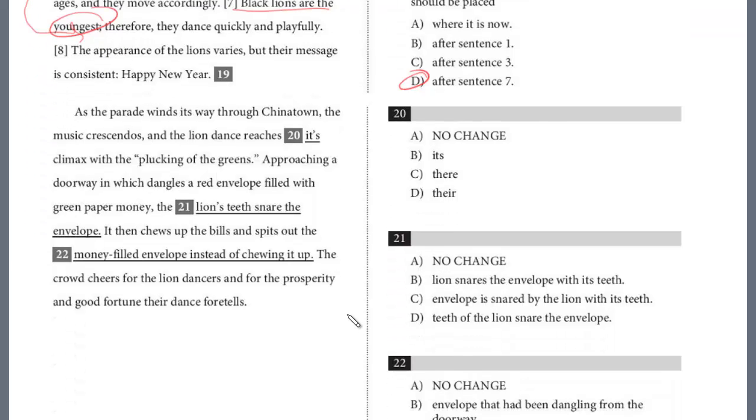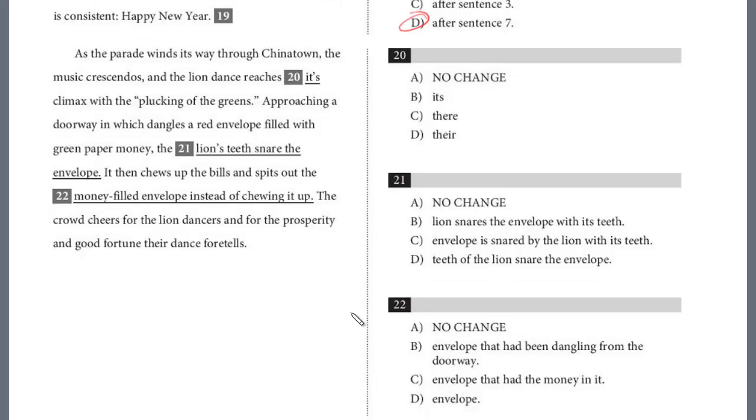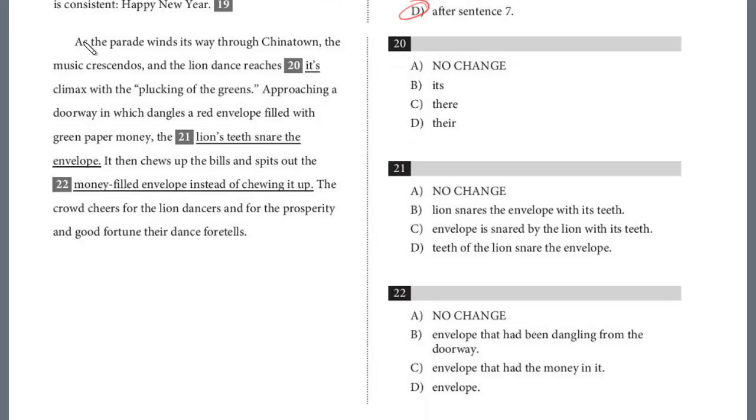Alright, let's take a look. We've got a few more questions in this passage. As the parade winds its way through Chinatown, the music crescendos and the lion dance reaches its climax with the plucking of the greens.